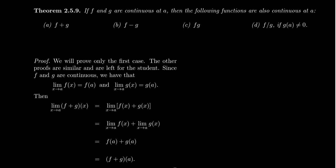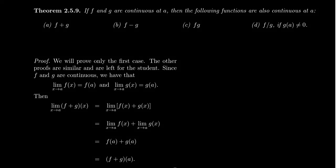Recall that a function is continuous if the function evaluation agrees with the limit calculation. What we care about in this video is how we can combine continuous functions together. So if f and g are continuous functions at the point x equals a, then when we do the four arithmetic operations to these functions and combine them in that way, that'll preserve the continuity.